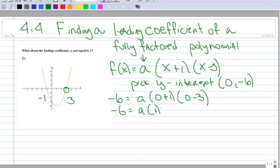So this becomes one, this becomes negative three. You divide both sides by negative three, and then you get a equals two. Okay, so that's still a fine method to use.